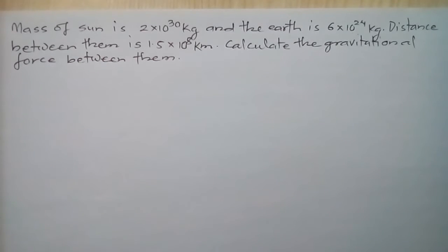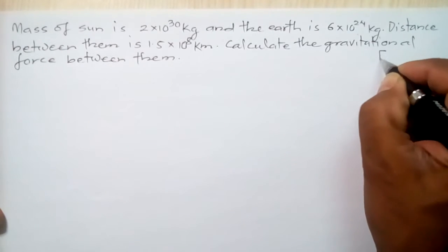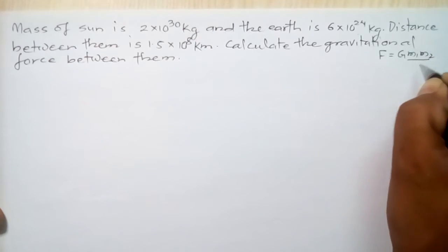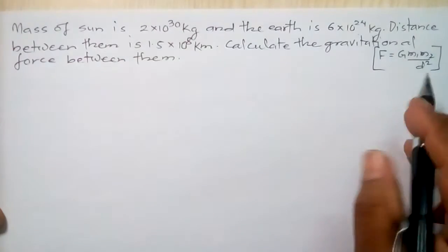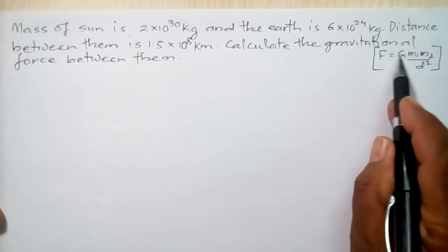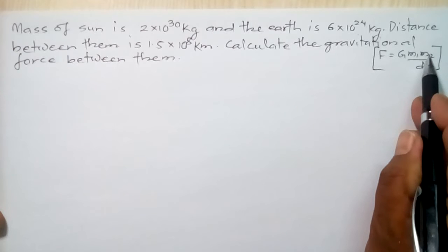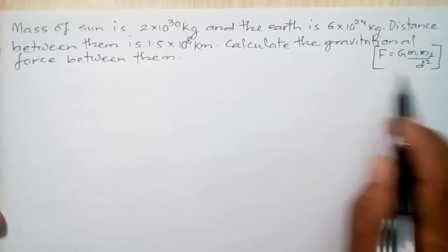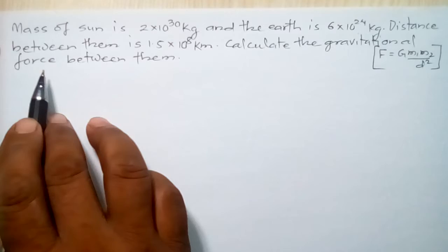I am going to solve a numerical problem related to the equation F equal to G m1 m2 by d square. This equation is obtained from Newton's law of gravitation, where F means gravitational force, G is the gravitational constant, m1 is the mass of the first body, m2 is the mass of the second body, and d is the distance between them.